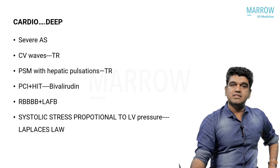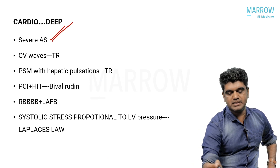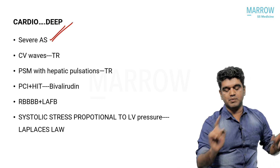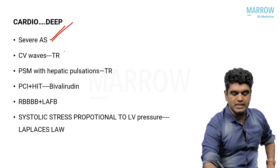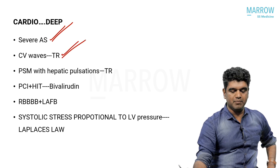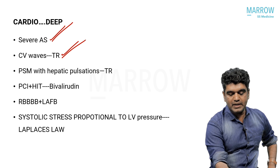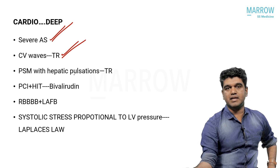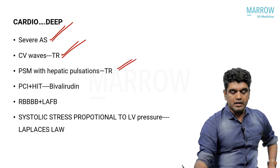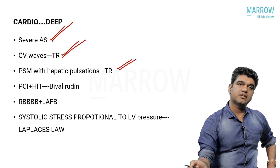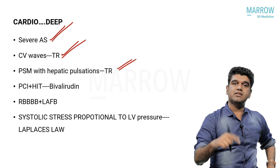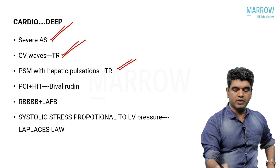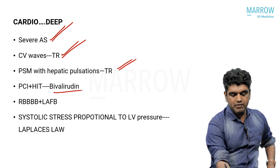Severe AS — a simple question you can answer even with medicine-level videos. Paradoxical splitting of S2 was the key finding. CV waves and tricuspid regurgitation — again very basic. Pansystolic murmur with hepatic pulsations indicating tricuspid regurgitation — again very basic knowledge.